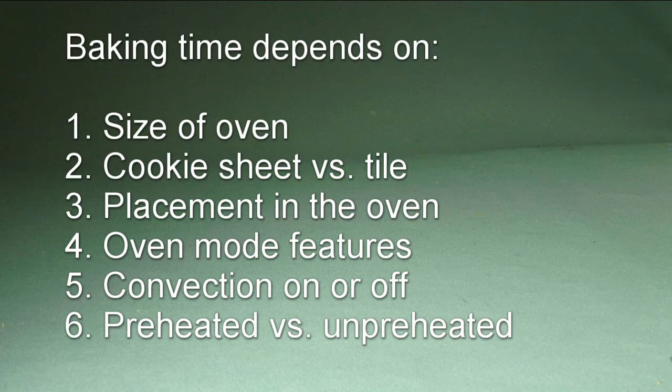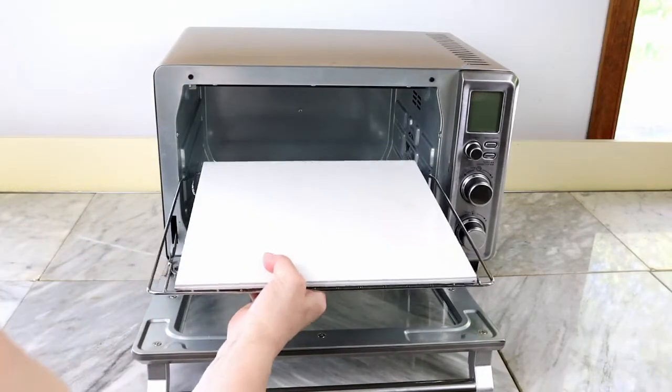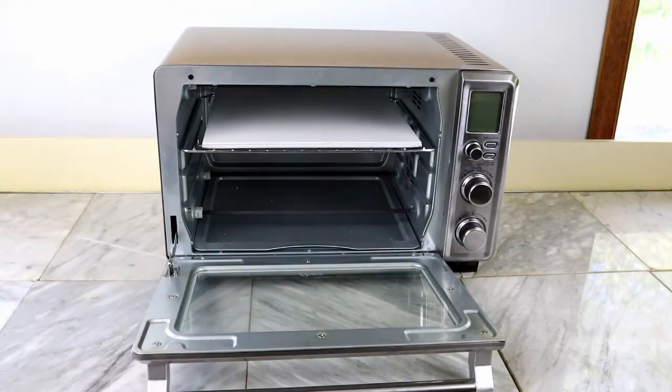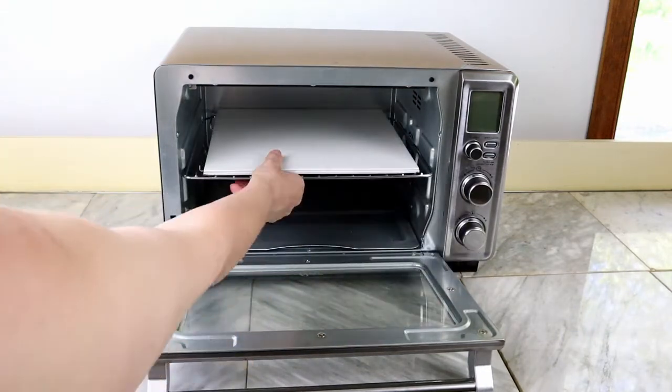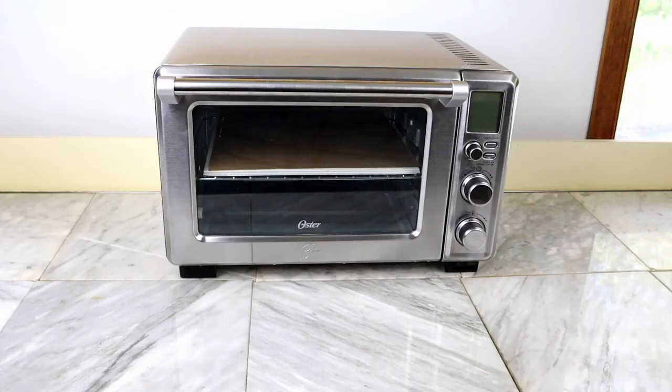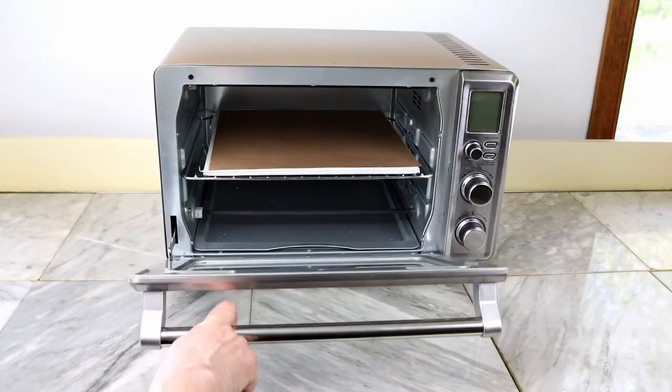My previous oven was smaller and everything took about half the time of this one. We already talked about that cookie sheets versus tile will change times. Placement in the oven is another one. My oven has three levels and I usually bake in the middle. Unless I'm filming it, the camera likes the bottom rack better. I tried bake versus broil, but I think the bake feature won. And definitely turn off the convection feature. You have seen the mess that makes.